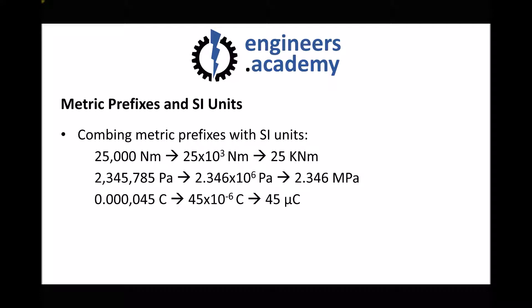We can combine metric prefixes and SI units. For example, 25,000 newton metres is the same as 25 times 10 to the 3 newton metres, or 25 kilonewton metres. Similarly, 2,345,785 pascals is the same as 2.346 times 10 to the 6 pascals, or 2.346 megapascals. And 0.000045 coulombs is the same as 45 times 10 to the minus 6 coulombs, or 45 microcoulombs.